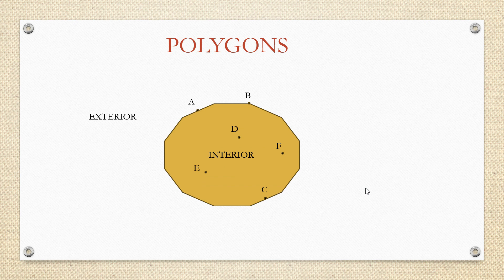D, E, F are the points that lie within the polygon. So they are interior points. G, H, I are the points that lie exterior to the polygon which form the exterior points.